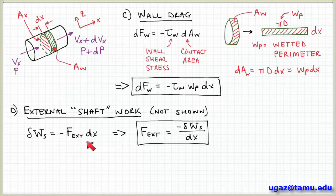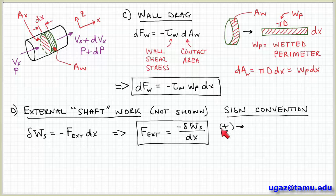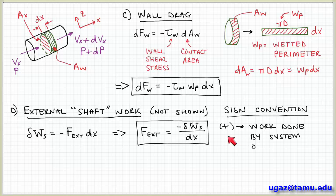Remember work is just equal to force times distance. So if we solve for this force, then that would be equal to minus Δw over dx. And remember the sign convention that we have for work is that work is positive if it's done by the system on the surroundings. And it has a negative sign if it's done by the surroundings on the system.